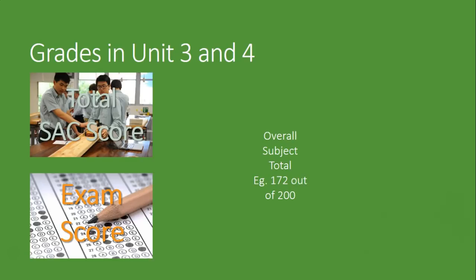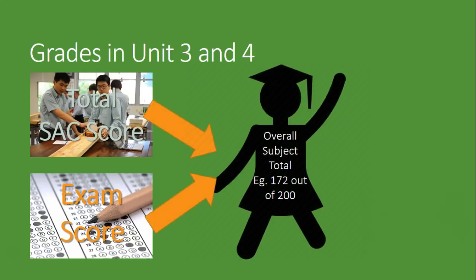You get a total SAC score after statistical moderation, and you get an exam score. Those two are added together in some sort of weighting, usually either two-thirds SACs and one-third exam, or maybe the opposite, or somewhere in between. 50/50 is pretty normal. So you get an overall subject score. Let's say this person gets 172 out of 200.